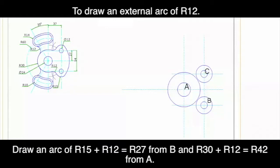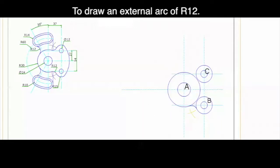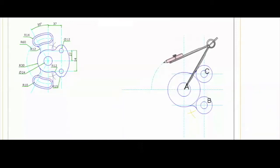After that to draw radius 12 which is an external arc we will take 27 from B and 42 from A and from that point we will draw radius 12. Same on the other side and then again from point A we will draw radius 16.